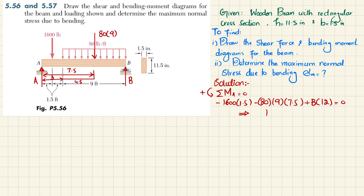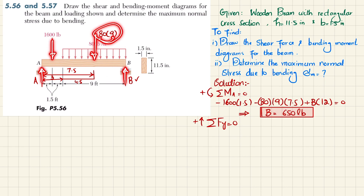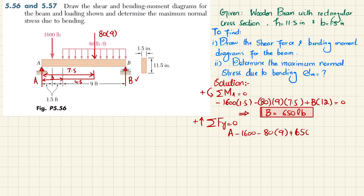Solving this gives B equal to 650 pounds. The positive sign confirms the force is directed upward, which is correct. Now finding A using the sum of forces in the y-direction equal to zero: A plus B minus 80 times 9 minus 1600 equals zero. Substituting B = 650 and solving gives A equal to 1670 pounds.